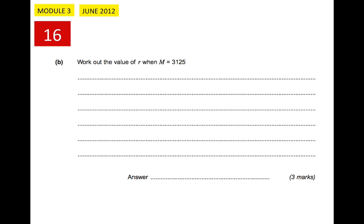Now the next part of the question asks us to work out the value of r when M equals 3,125. So we're using the same relationship again, M equals 1.6 times r cubed. But this time they're telling us what M is and asking us to work out what r is. So it's the same kind of problem as before, but in reverse.